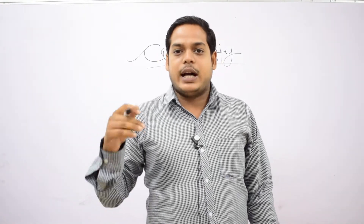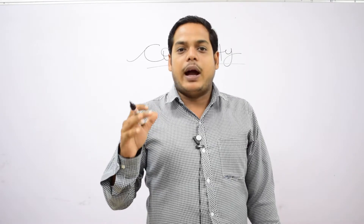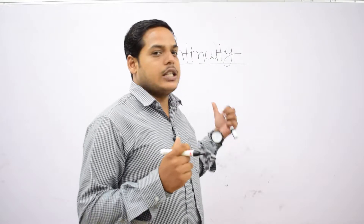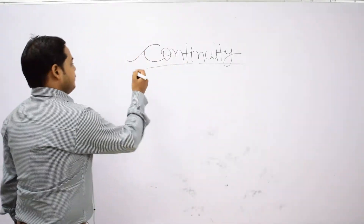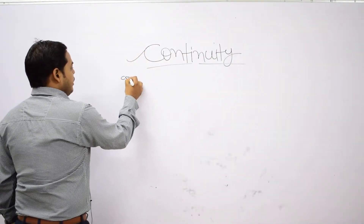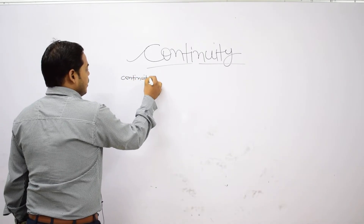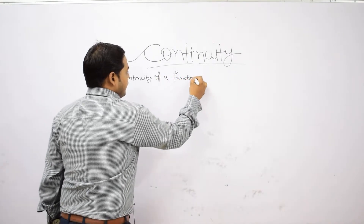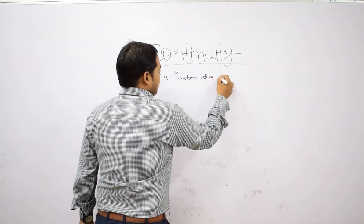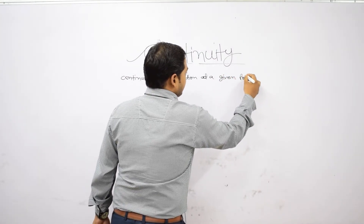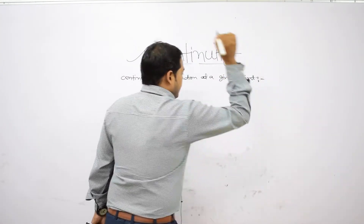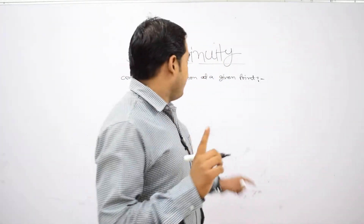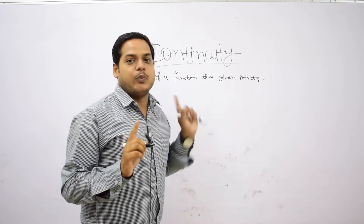Similarly, continuity is also a point-based property. For a given function, it is either continuous at the given point or it is not continuous at that point. How will we check continuity? What is continuity? Why do we discuss about continuity in mathematics? All of these things we will know inside this chapter.